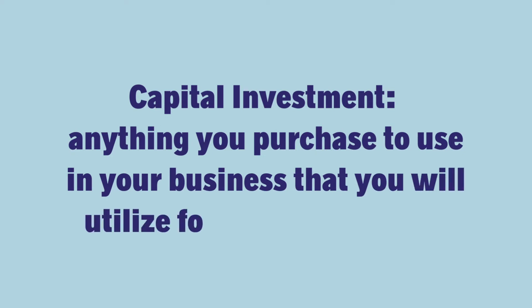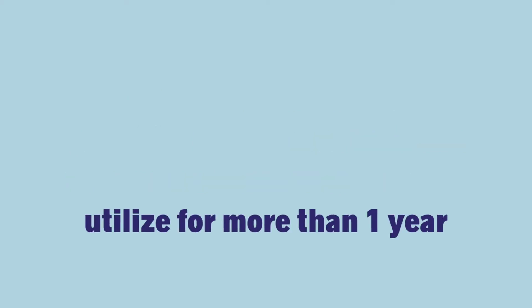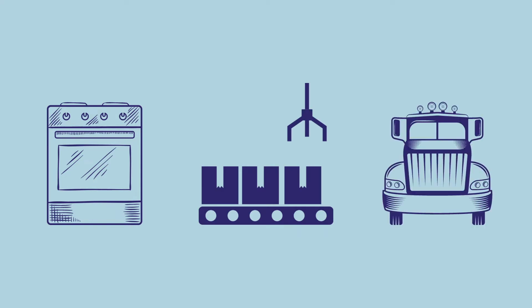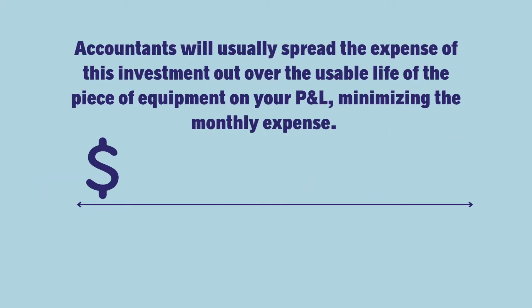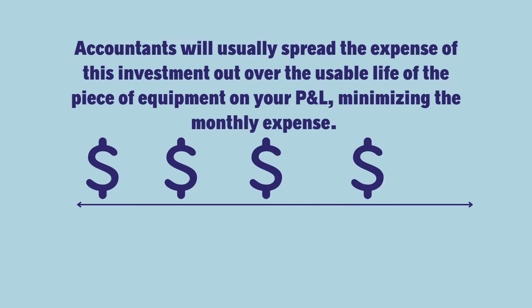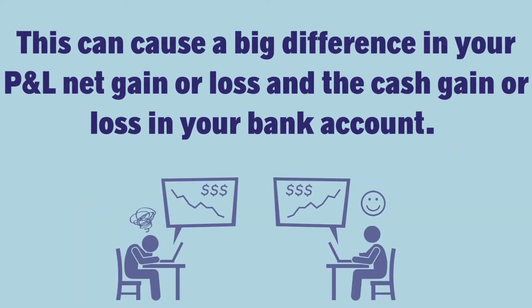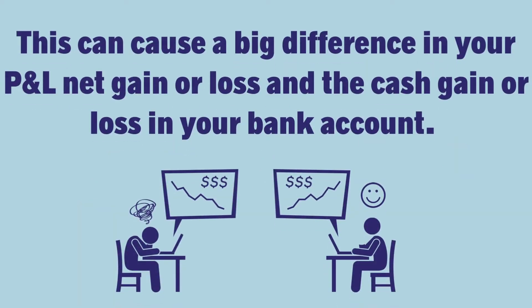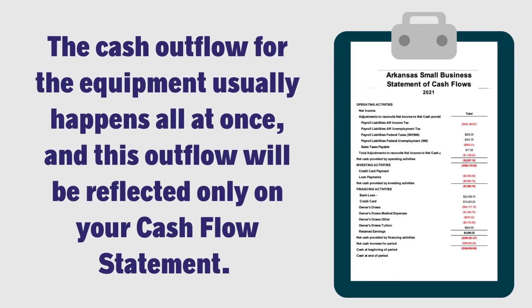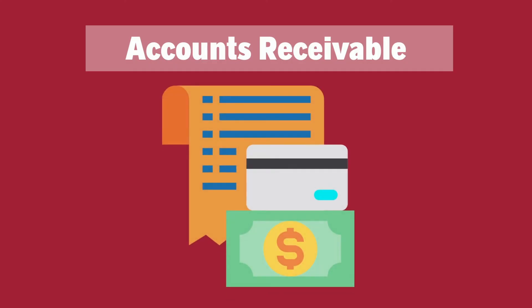Number three: capital investments. A capital investment is usually considered anything you purchase to use in your business that you will utilize for more than one year — usually equipment of some kind, like kitchen equipment, manufacturing equipment, or even a vehicle. Accountants will usually spread the expense of this investment out over the usable life of the piece of equipment on your P&L, minimizing your monthly expense. This causes a big difference between your P&L net gain or loss and the cash gain or loss in your bank account. The cash outflow for the equipment usually happens all at once and will be reflected only on your cash flow statement.